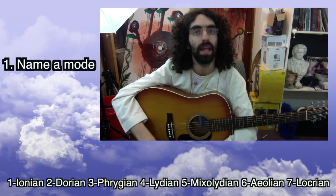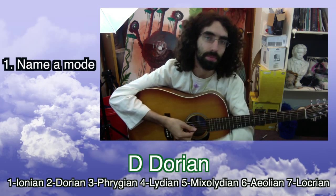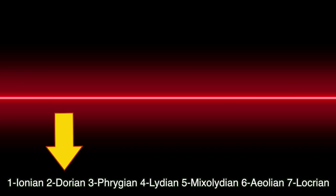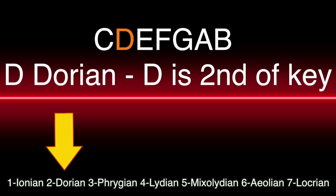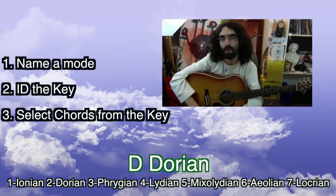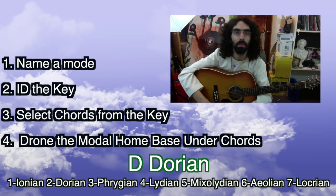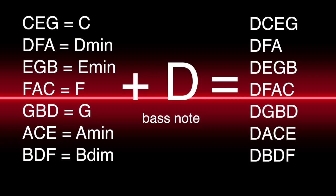Step one: pick a mode and name it. So let's pick D Dorian because that's an easy mode to think about. Step two: we're going to find out what key that mode is in. D Dorian is in the key of C because Dorian is the second mode — D is the second note in the key of C. Step three: we're going to pick chords from the key of C using any method you know. And step four: we're going to put the modal home base note under all of them as a pedal tone or a drone. So we take these chords from the key of C and stick a D under all of them, then pick a few that we like.